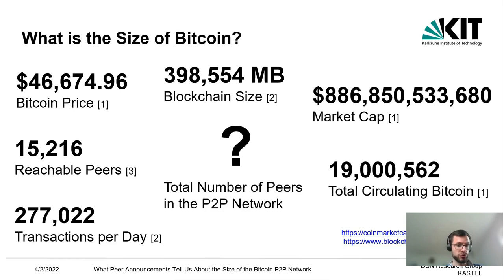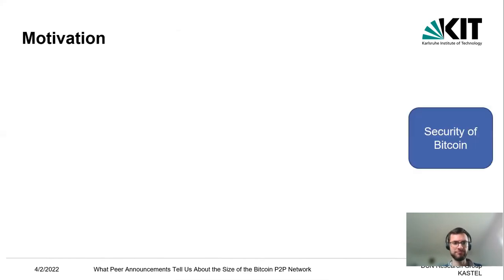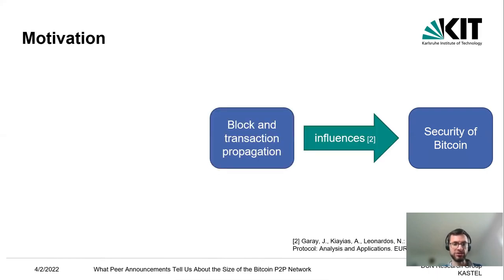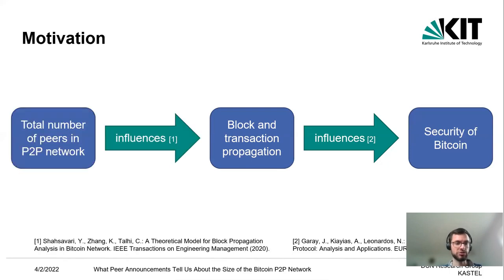But what we do not know is the total number of peers in the peer-to-peer network, and this is what this presentation is about. For the security of Bitcoin, the propagation of blocks and transactions is relevant, and block and transaction propagation is influenced by the total number of peers in the peer-to-peer network.